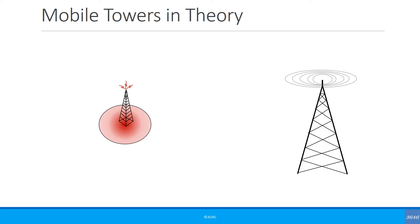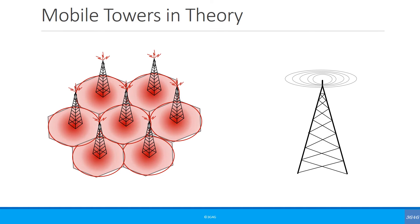Let's recap mobile towers. Generally in books you would see that the mobile tower or the antenna site is at the center of a cell with an omnidirectional antenna, and the cell is circular in shape. When there are a lot of these cells you can draw the edges and they are hexagonal in shape. This is where the word 'cellular' comes from, because they look like cells.